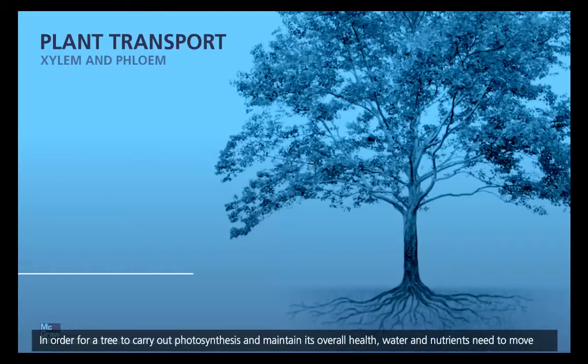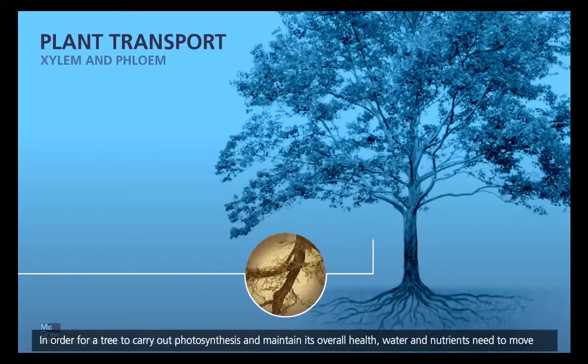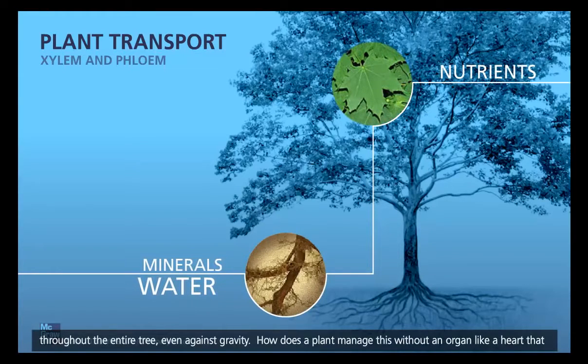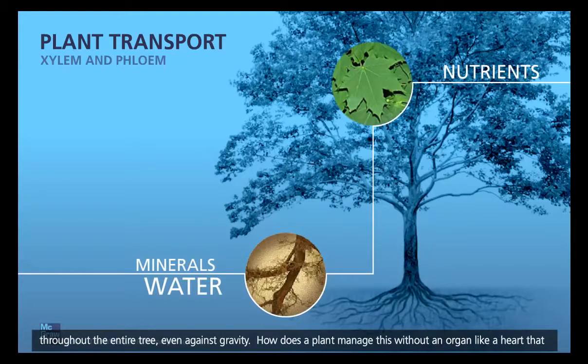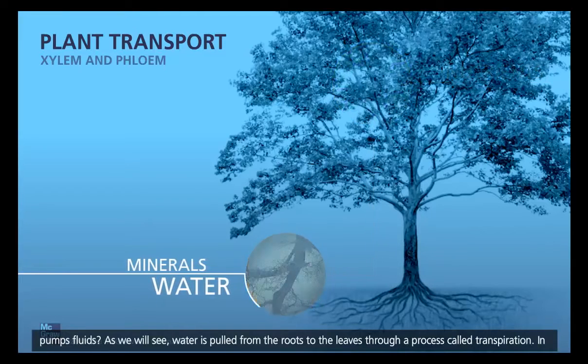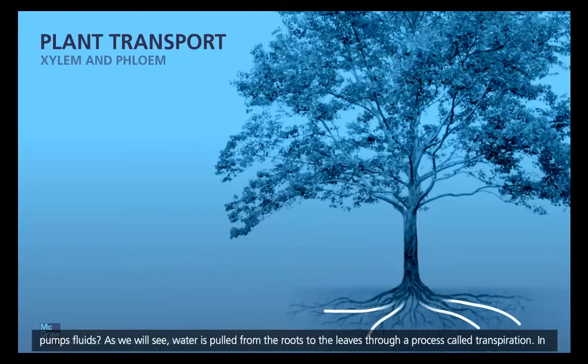In order for a tree to carry out photosynthesis and maintain its overall health, water and nutrients need to move throughout the entire tree, even against gravity. How does a plant manage this without an organ like a heart that pumps fluids? As we will see, water is pulled from the roots to the leaves through a process called transpiration.